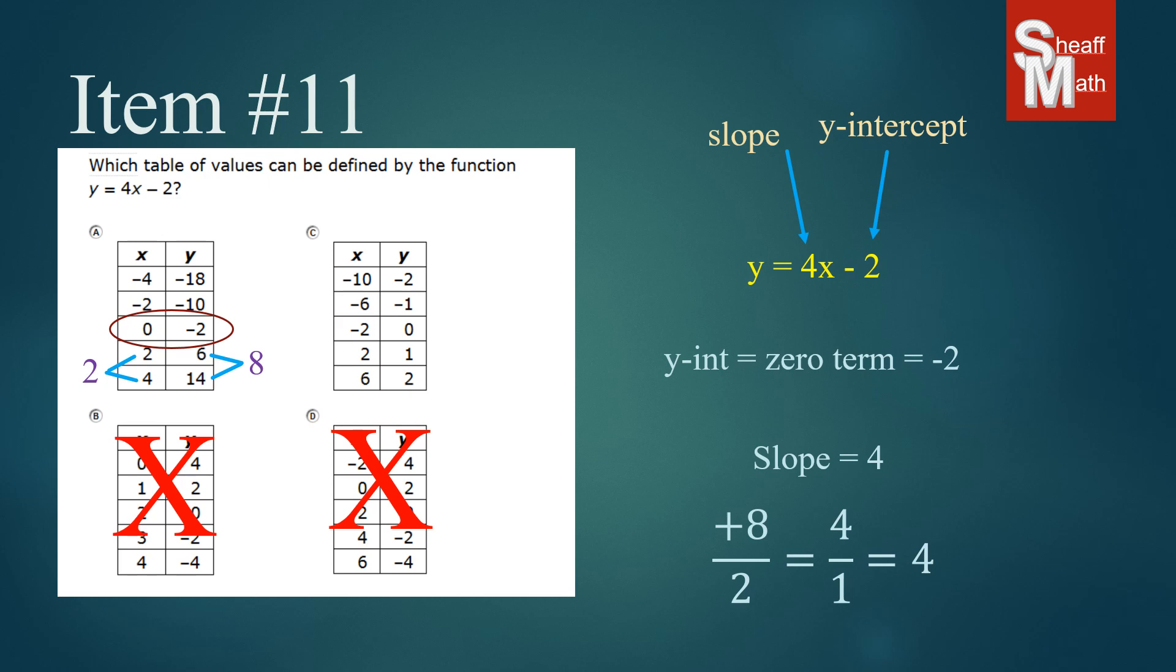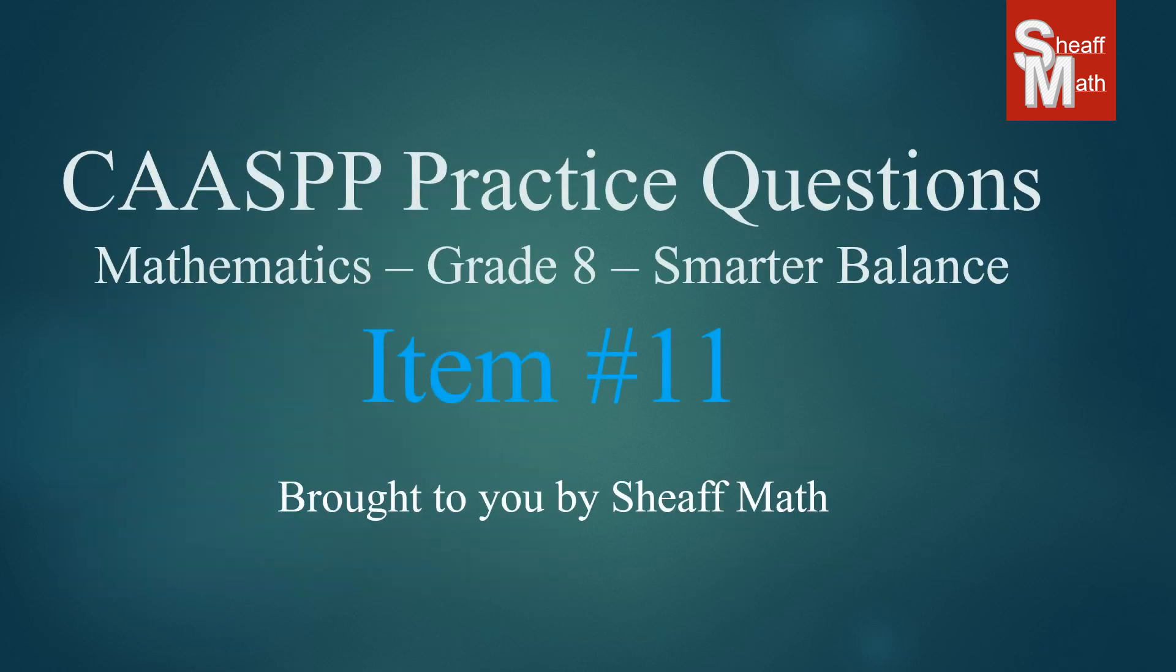C, there's a lot of problems to it, and you would find out that it doesn't have the slope or the zero term, which is correct. And so we can cancel that out. And our correct answer would be A. I hope that helped. Thank you.